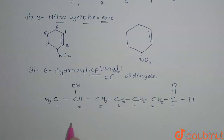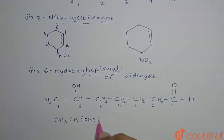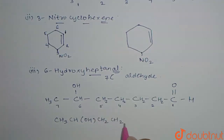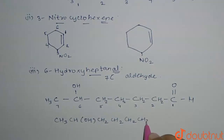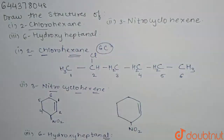So I will write it in its simple form: CH3-CHOH-CH2-CH2-CH2-CH2-CHO. Our question was to draw the structure, and I have drawn all 3 structures. Thank you.